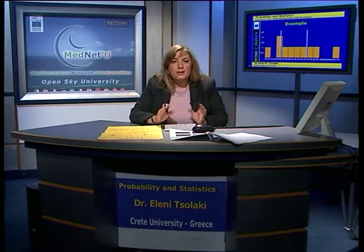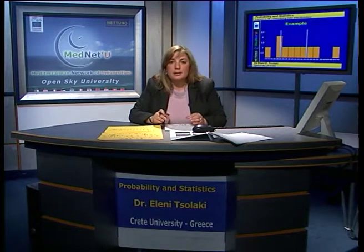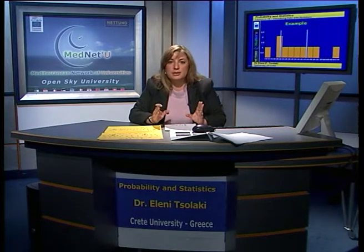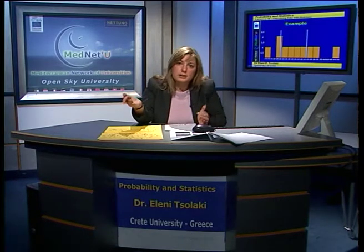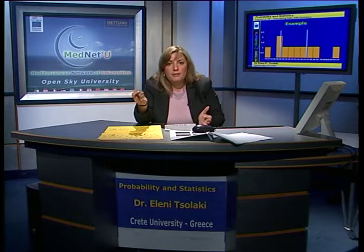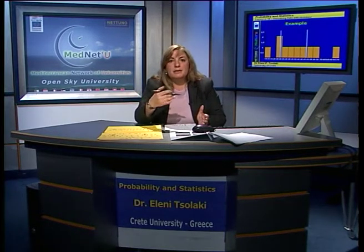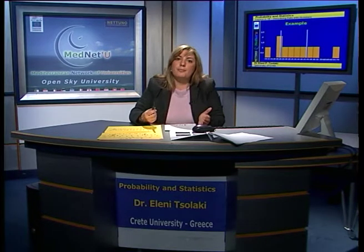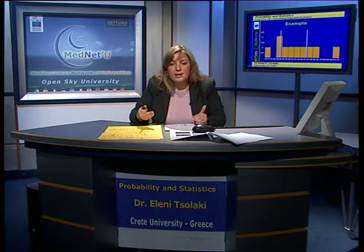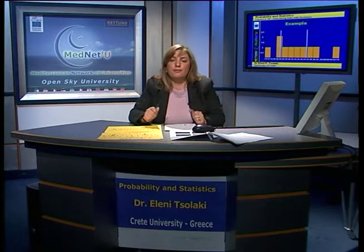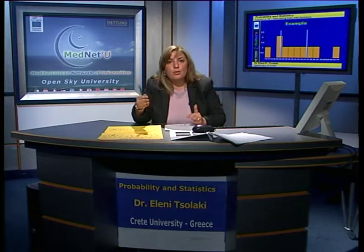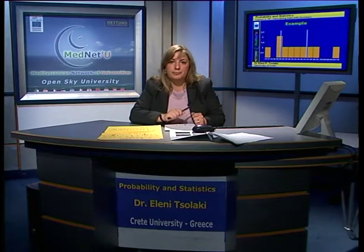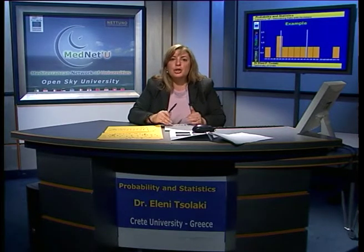We remember that we used quartiles in the last lesson when we plotted the box plot. The box started from the first quartile up to the third quartile, including approximately half of the data. When the data are symmetrical, this box contains most of the information, so the interquartile range contains most information about our data.